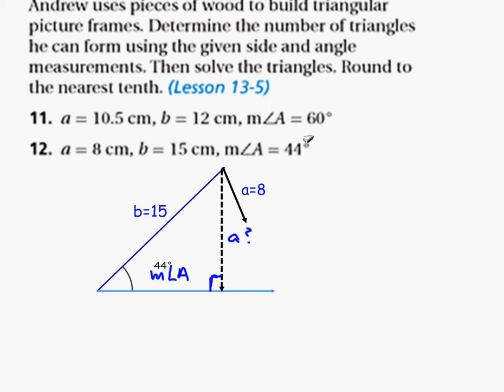So looking at this picture, here we show a being 8. What would a have to be in order for that to form a right triangle? So if a is big enough, if 8 is big enough for this, or if a is 8, given that it forms one triangle,